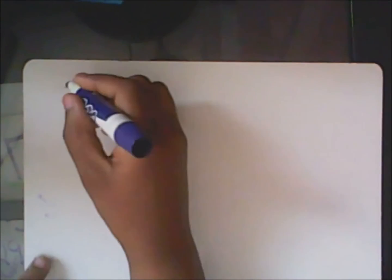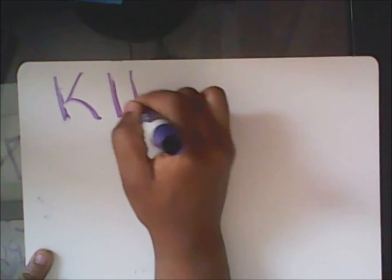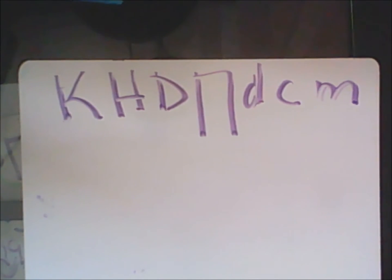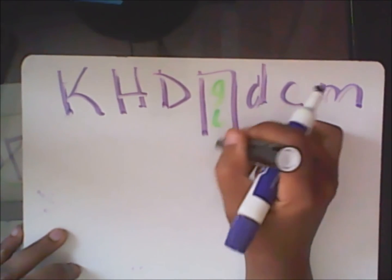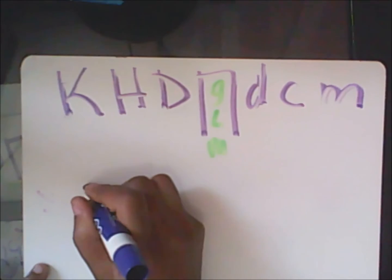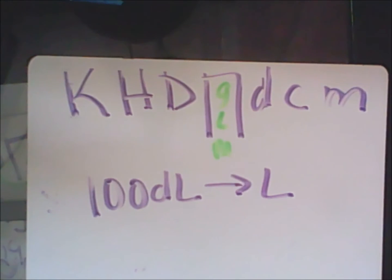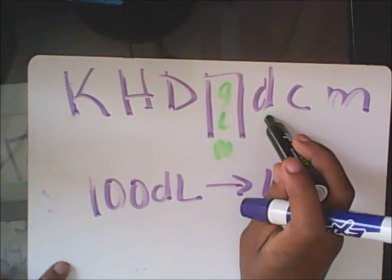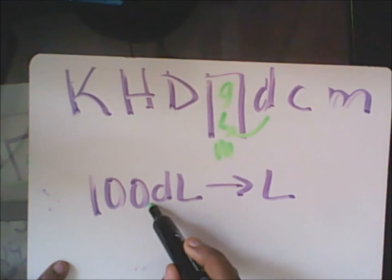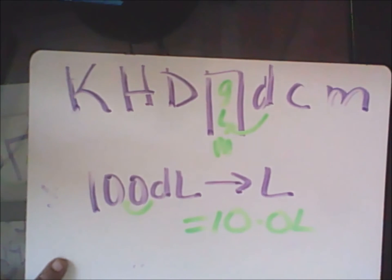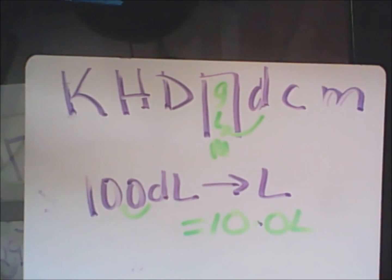Let's keep going with liters. I'll always have this as a reference: kilo, hecto, deca, the base, deci, centi, milli — with grams, liters, and meters in the middle. If I have 100 deciliters and want to convert to liters, liters is one space to the left of deci. Move the decimal back one place to the left and you end up with 10.0 liters.